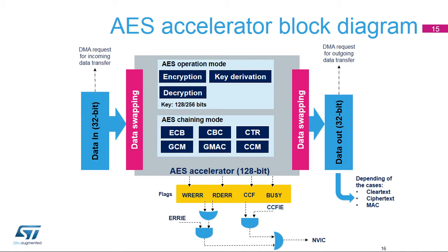The computation complete flag, called CCF, is set by hardware when the computation is complete. An interrupt is generated if the CCF interrupt enable bit was previously set. The busy flag, used only with GCM mode, indicates that a higher priority message can interrupt the current message during the GCM payload phase for encryption mode.